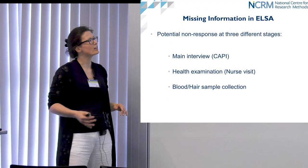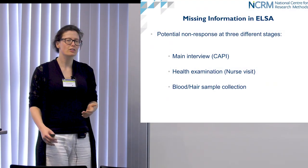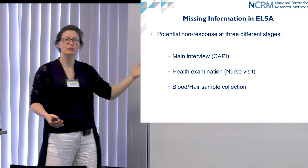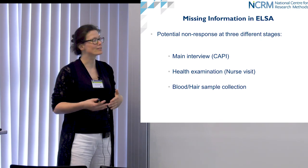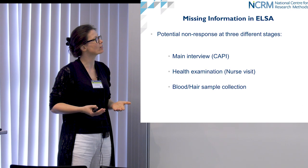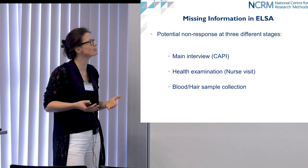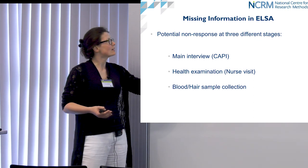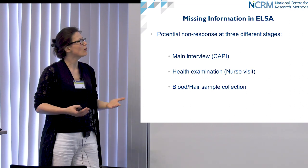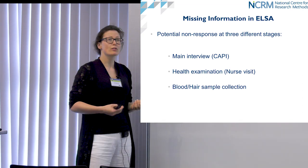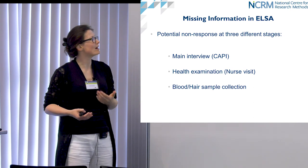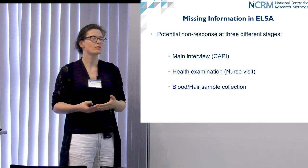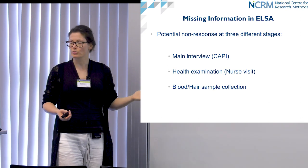Missing information — and Natsali already touched on that — can happen at different stages in the datasets. For ELSA it occurs in three main parts: in the main interview where people do not participate; then there's the burden of asking for consent for a nurse visit or health examination; and people may not be eligible due to bad health. A further dropout occurs when people either don't consent or aren't eligible to provide a blood or hair sample.